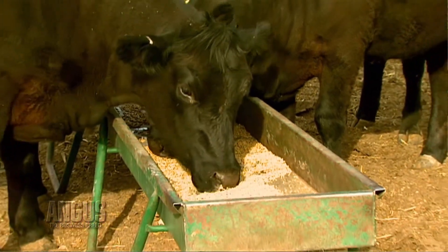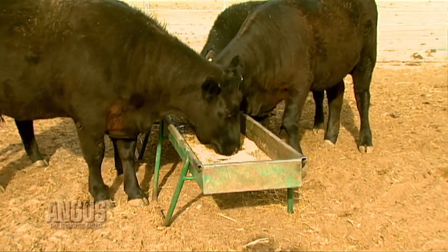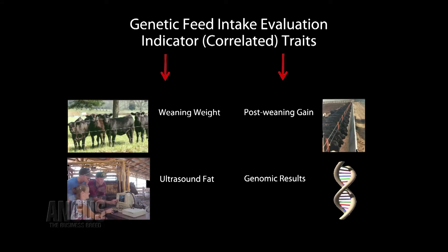However, when we want to evaluate an animal's genetics for feed efficiency, we need to have a good idea of their genetics for both feed intake and for growth, as well as correlated traits associated with both intake and growth. AGI has chosen to report these relationships and these traits as RADG, or residual average daily gain. I think it's easiest to understand the RADG EPD if we just walk through an example.